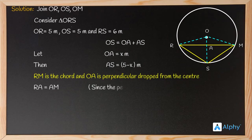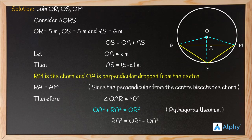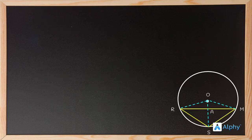RM is a chord and OA is the perpendicular from the center, so RA = AM since the perpendicular from the center bisects the chord. Therefore angle OAR = 90°. Applying Pythagoras theorem in triangle OAR: OA² + RA² = OR², so RA² = OR² − OA² = 5² − x² = 25 − x². Mark this as Equation 1.